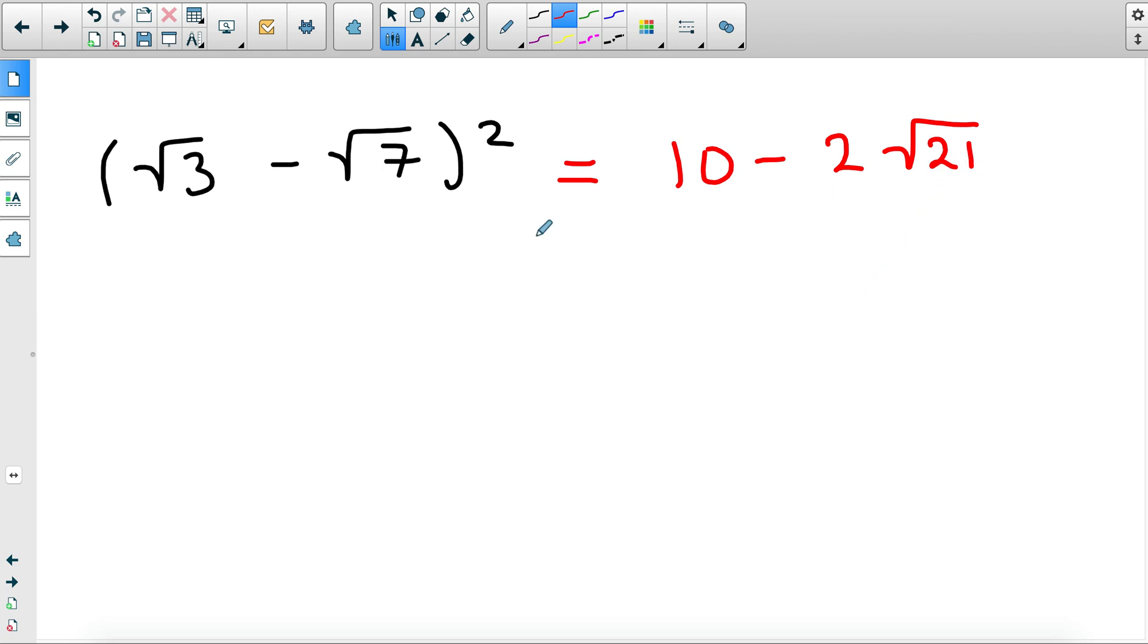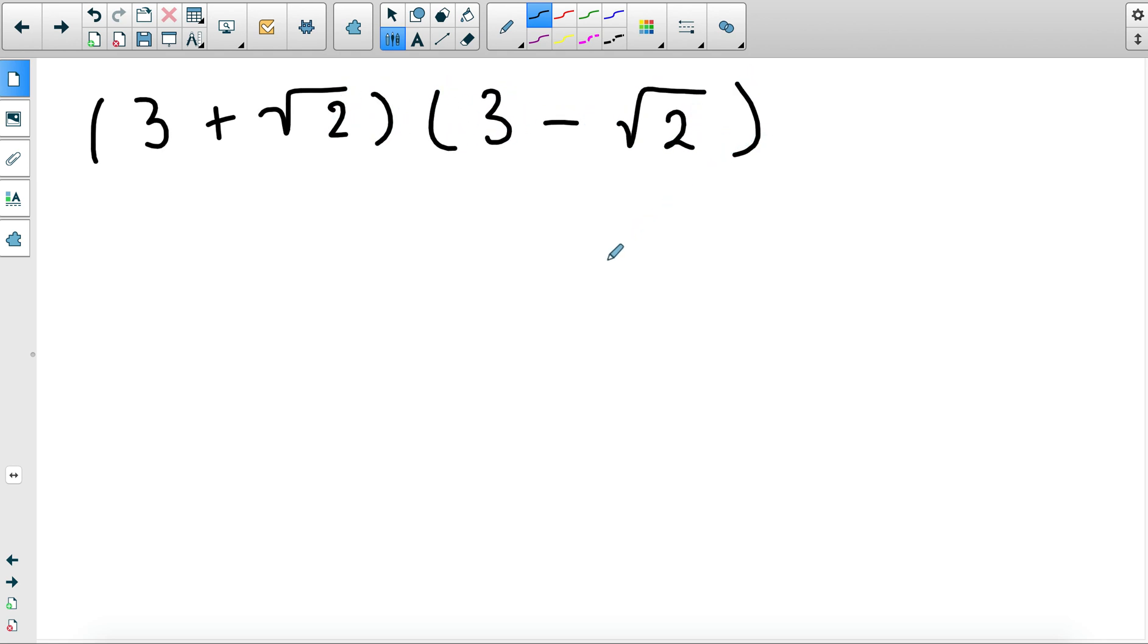You can easily spot why it's 21—you'll end up doing square root of 3 times square root of 7 which will go under one, which is square root of 21. And one last one: you have 3 plus square root of 2 and 3 minus square root of 2. Before you attempt this, try to notice what's unique about these two brackets and if you've seen such type of brackets before. So if you're ready for the solution, if you notice you actually have the difference of two squares.